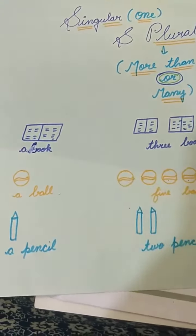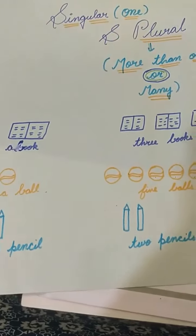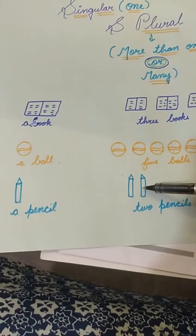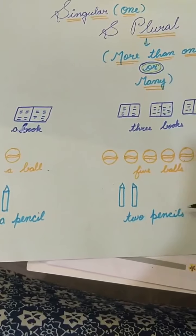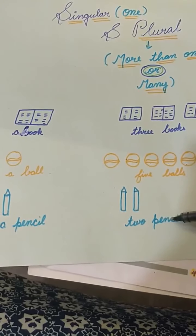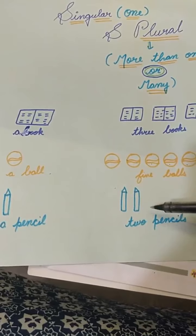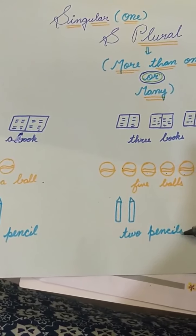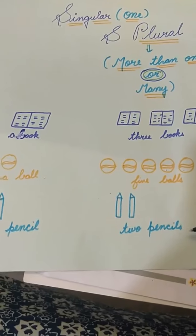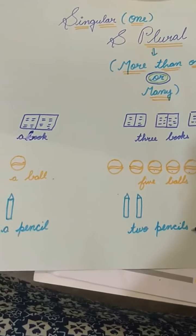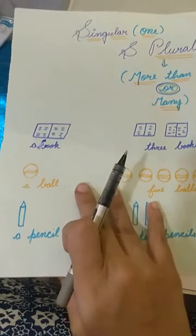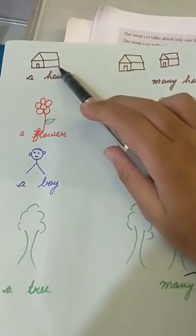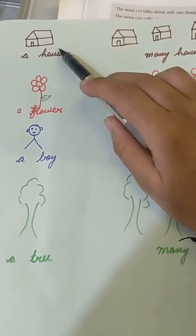A pencil — hum kitni pencil ke baare mein baat kar rahe hain? Abhi ek pencil ke baare mein. Yahan par kitni pencil hain? Two pencils — P-E-N-C-I-L-S. Kaise bataya ki do hain? Ismein humne S add kar diya. So this is a plural form.